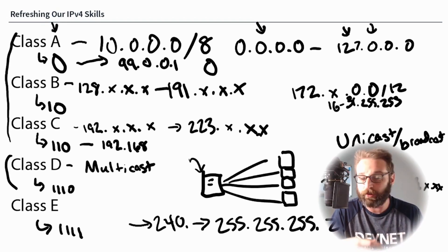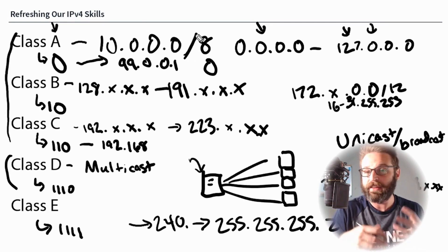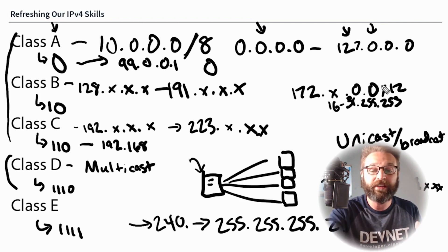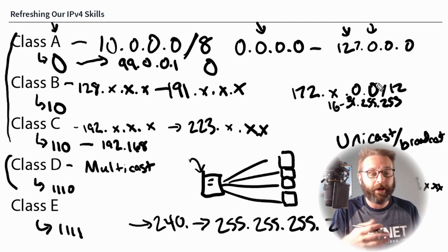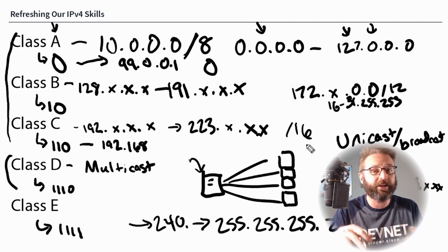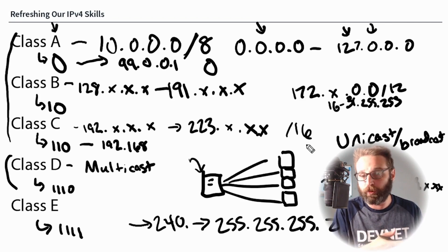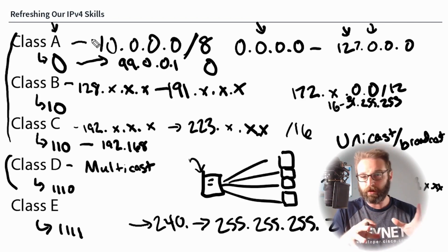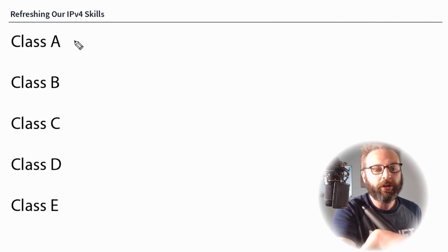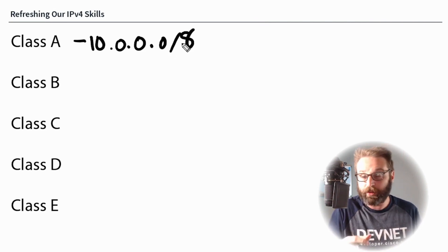These are important talking points about classful boundaries. When we see a slash 8, that is the Class A boundary. When we see the slash 12 in Class B, that's the Class B classful boundary. When we see slash 16 in Class C, that's the Class C classful boundary. Nine times out of ten, when you see 10, how often do you see 10.0.0.0 slash 8 out there in the real world? You don't.